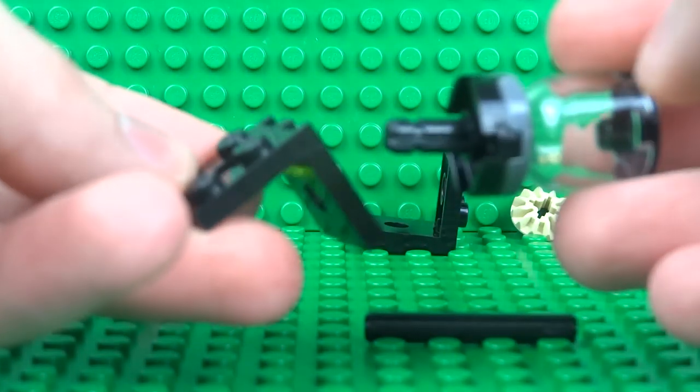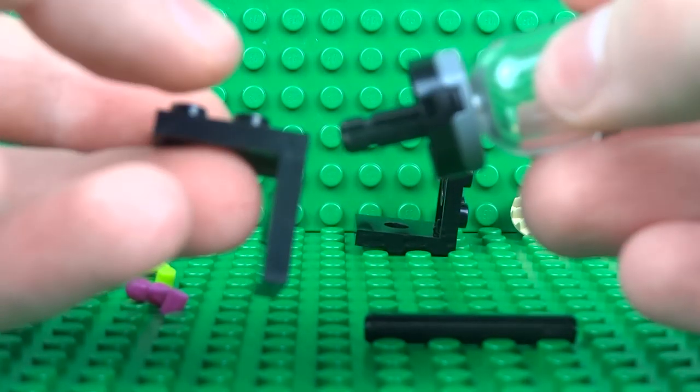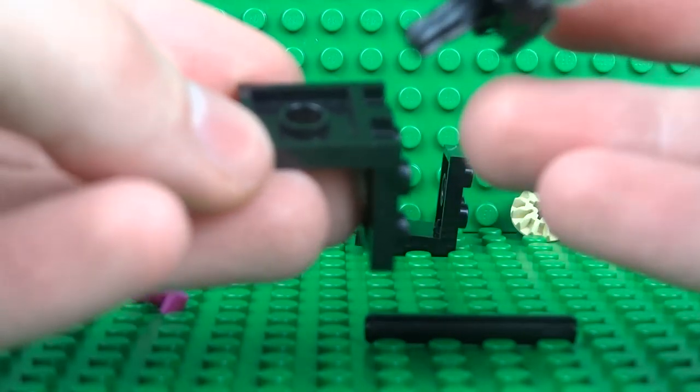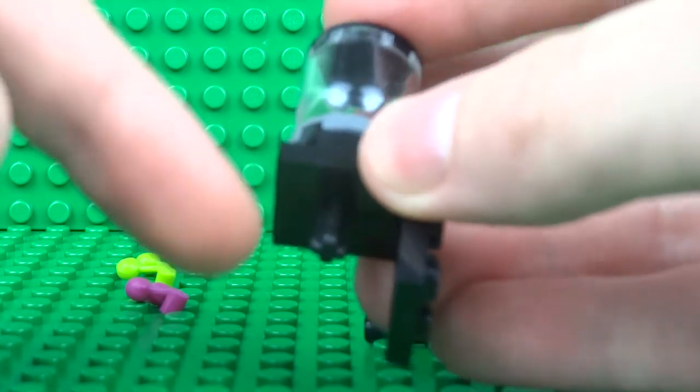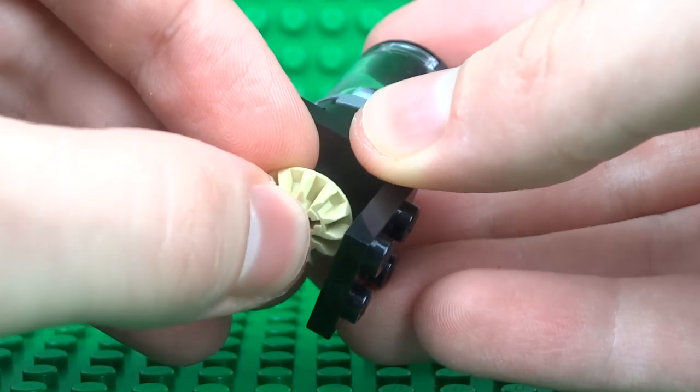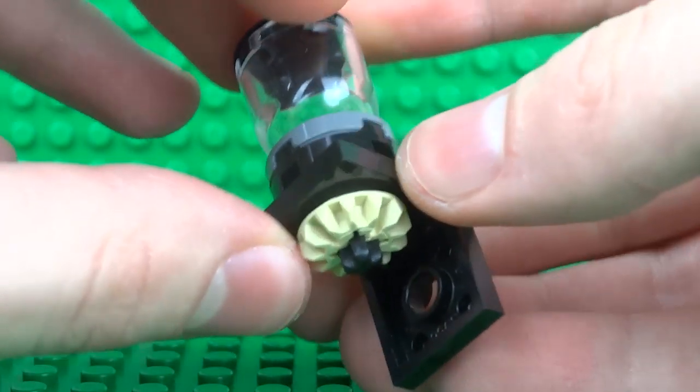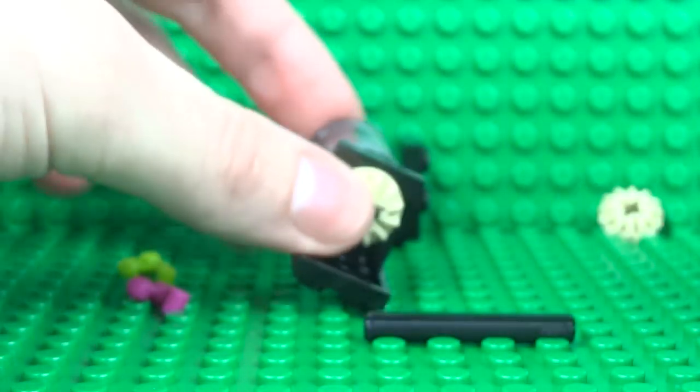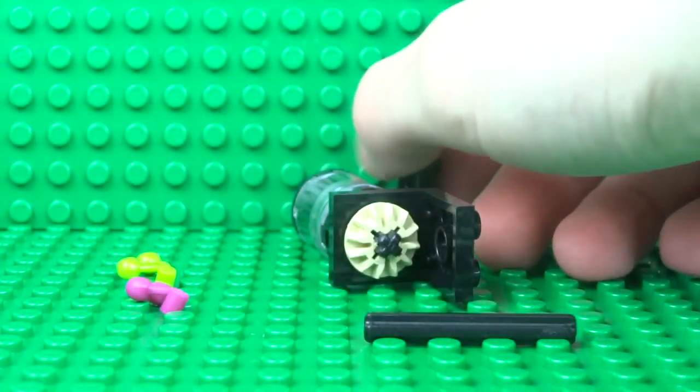And then you can take one of your bracket pieces. You will need to rotate this upside down just like this, and this is where you can thread the top of the blender through. And you can secure this whole thing in place with a half-size bevel gear that should be able to rotate nice and smoothly.